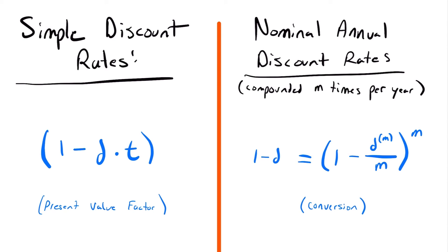Just like there are different types of interest rates, there are also different types of discount rates. We have been looking at compounded discount rates, but we can also have simple discount rates. For a simple discount rate, the present value factor is (1 - d·t) — multiplying d by time — rather than raising (1 - d) to the power of t. We can also have nominal annual discount rates, compounded m times per year, with a corresponding conversion formula. Otherwise, nominal discount rates work just like nominal interest rates.